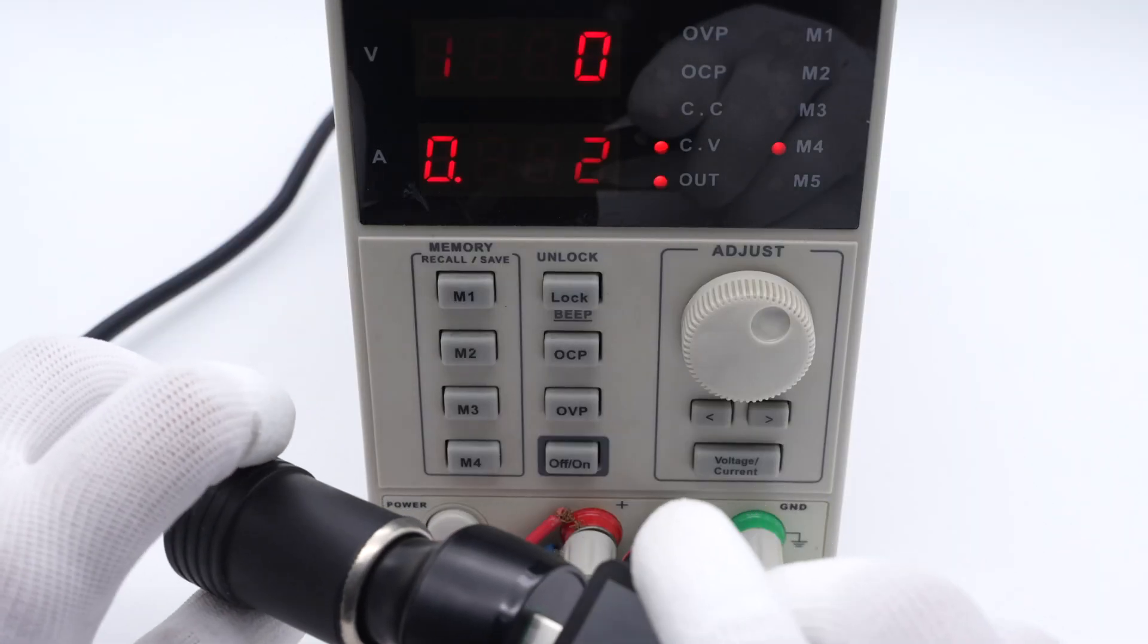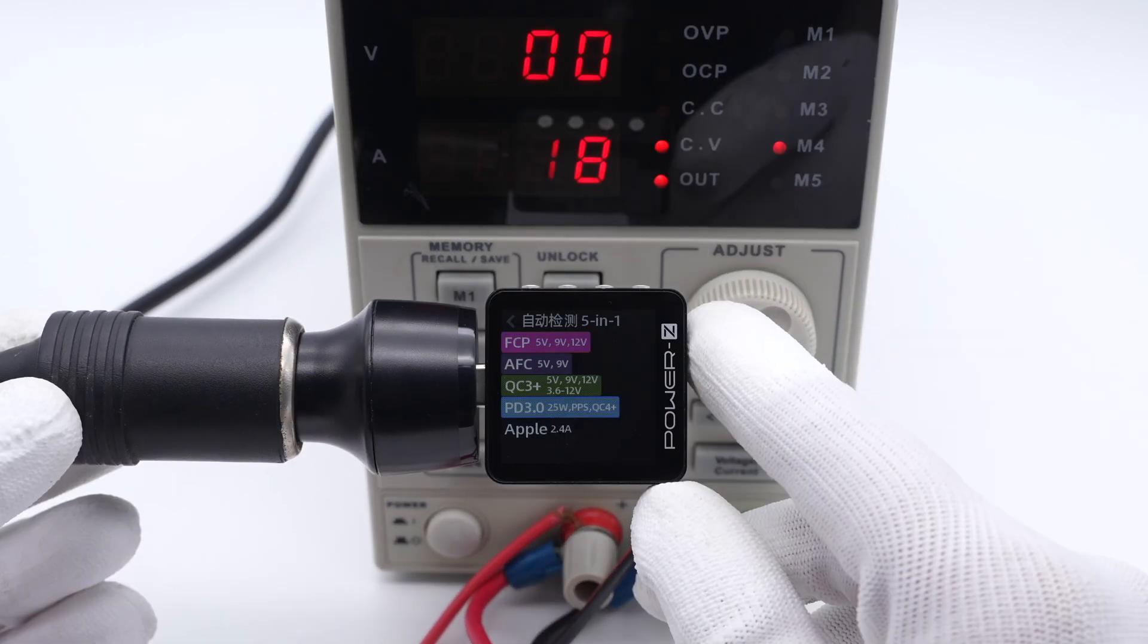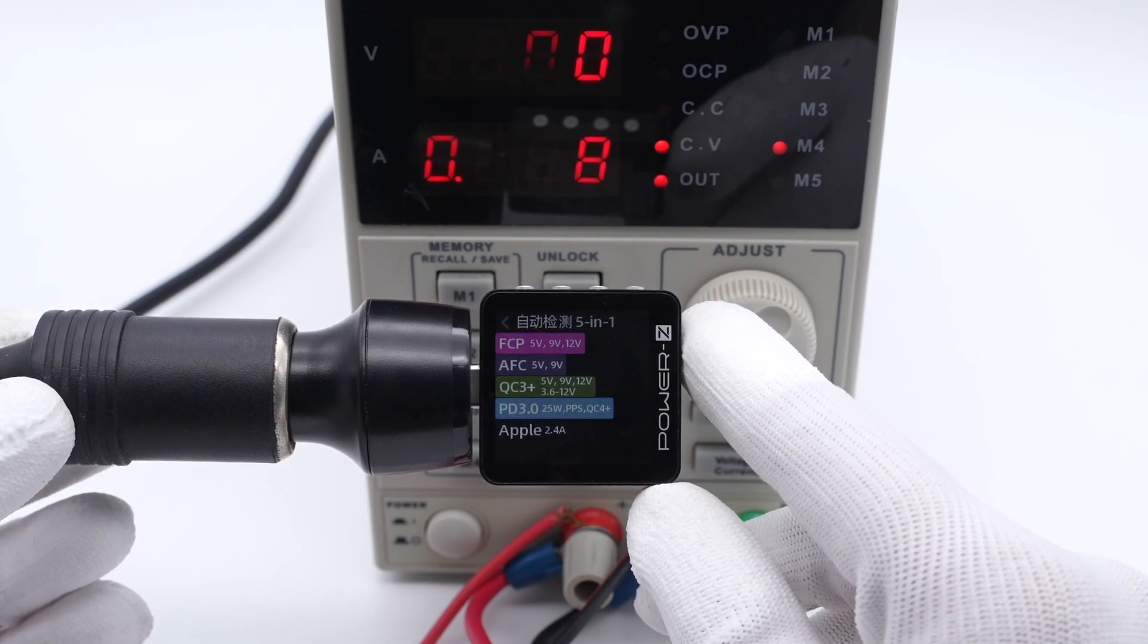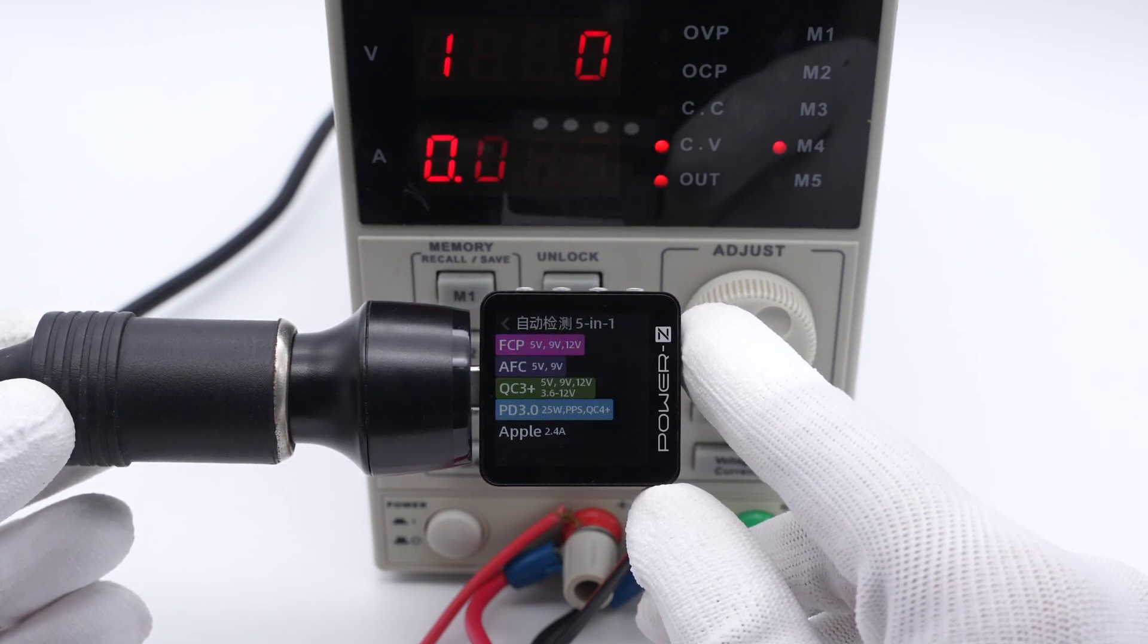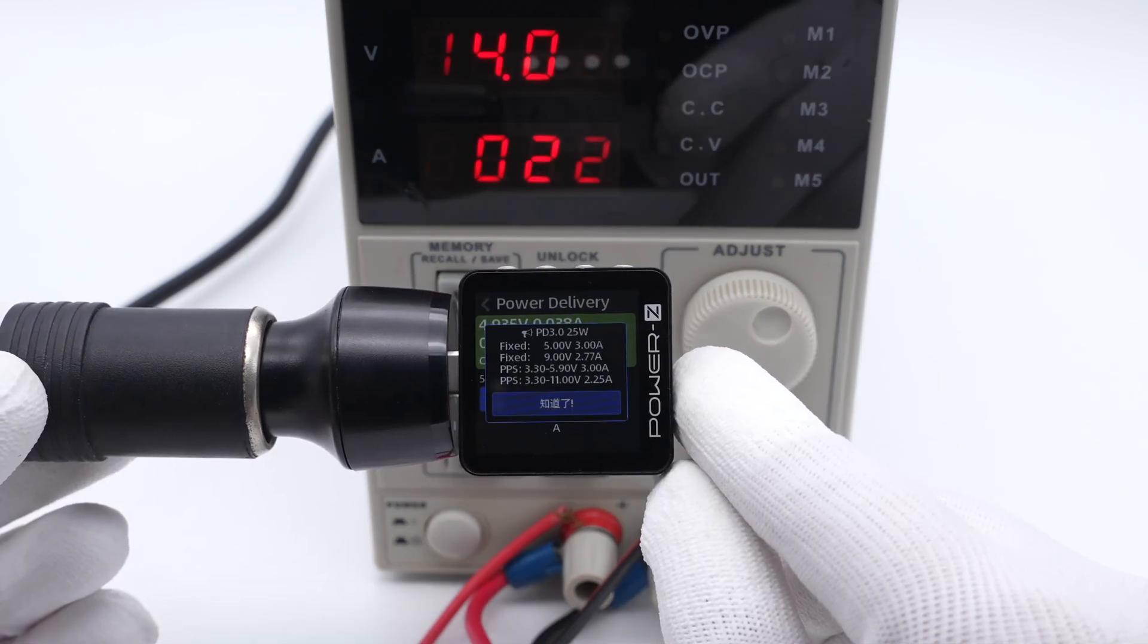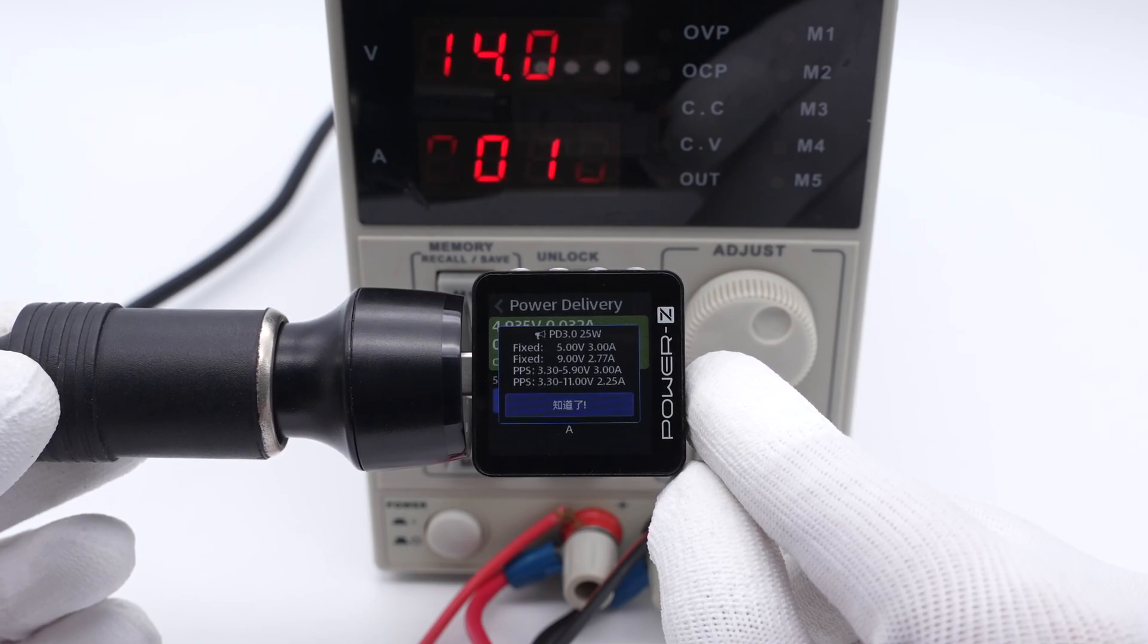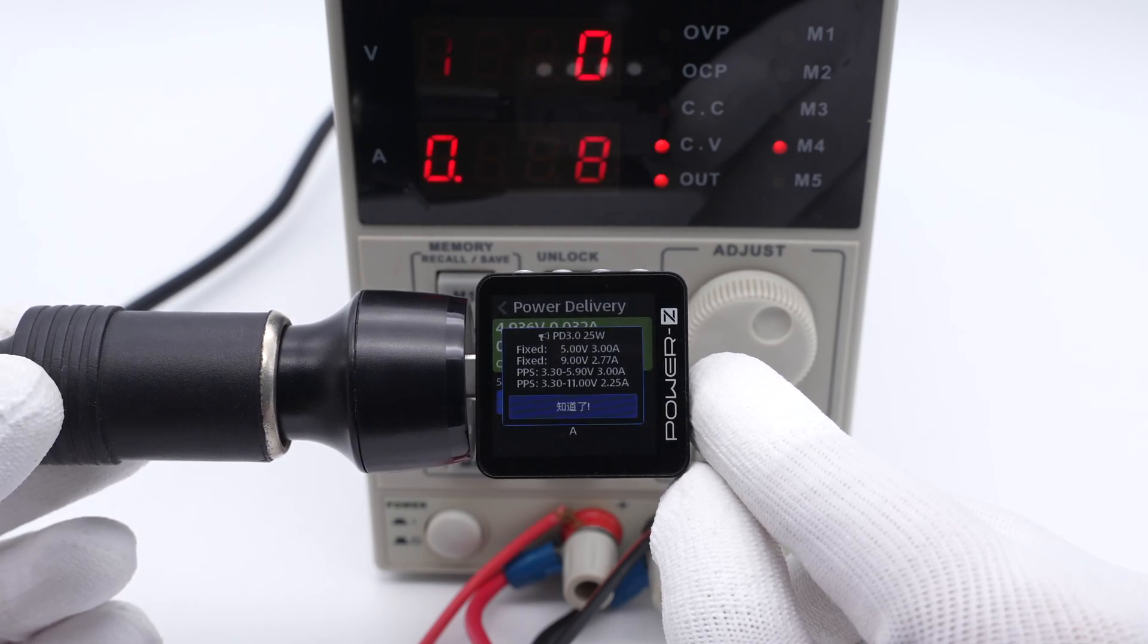At 14V DC input, the Trilab PowerZ KM003C shows the USB-C1 supports FCP, AFC, QC3+, 4+, PD3.0, PPS, and Apple 2.4A protocols. It also has two fixed PDOs of 5V 3A, 9V 2.77A, and two sets of PPS.